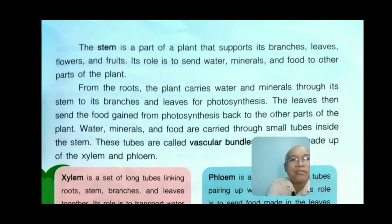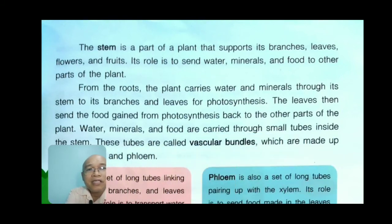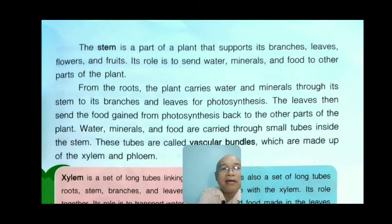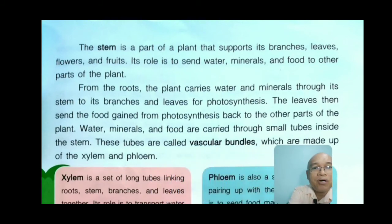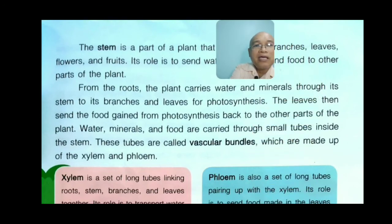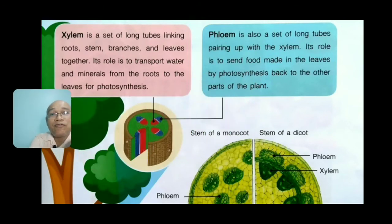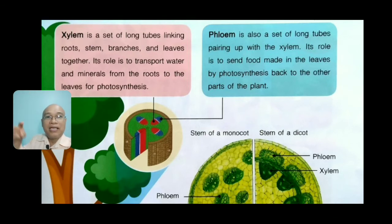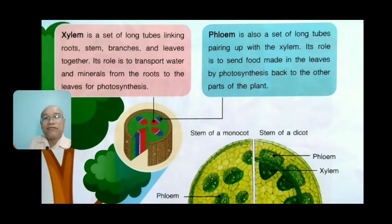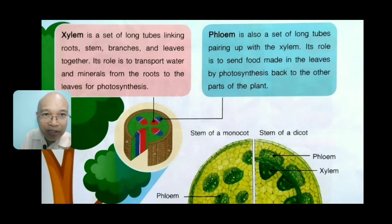The leaves then send the food gained from photosynthesis back to other parts of the plant. Water, minerals, and food are carried through small tubes inside the stem called vascular bundles, which are made up of the xylem and phloem. Xylem is a set of long tubes linking roots, stem, branches, and leaves together. Its role is to transport water and minerals from the roots to the leaves for photosynthesis.